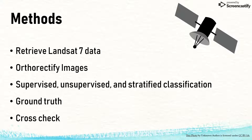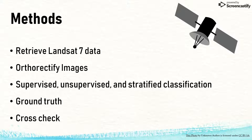The researchers also rectified those Landsat images, and then they conducted supervised, unsupervised, and stratified classification on the data. This distinguished nine land cover categories, which include urban, herbaceous vegetation, deciduous forest, coniferous forest, mixed forest, water, wetlands, barren lands, and bare rocks.